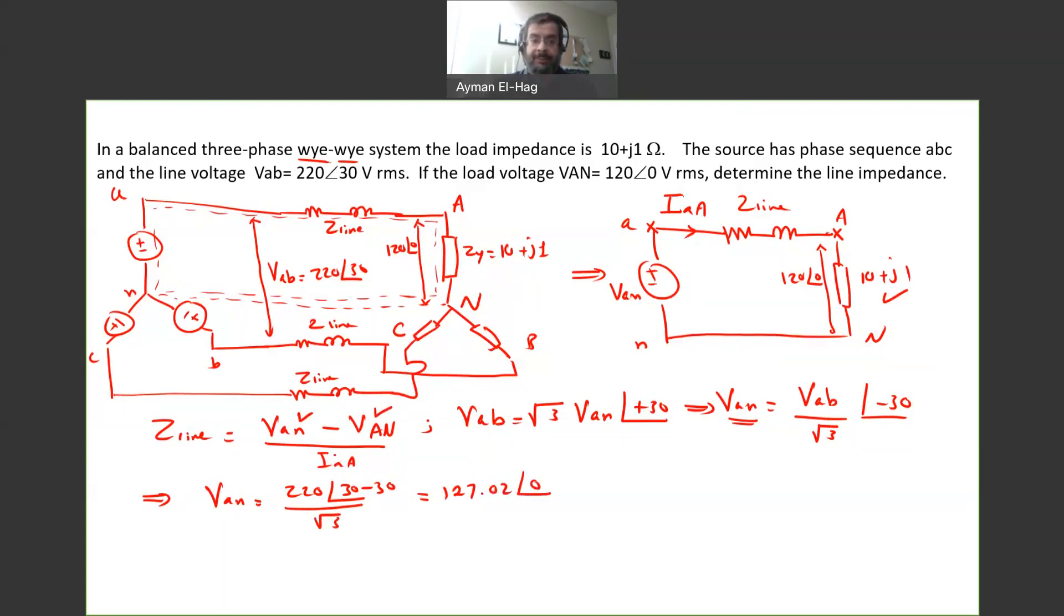I need to find IAA. Now, because we have a Y connection at the load, the line current IAA is the same as the phase current. So basically, your IAA is nothing but the phase voltage, 120 angle of 0, divided by the impedance of the load, which is 10 plus J1.